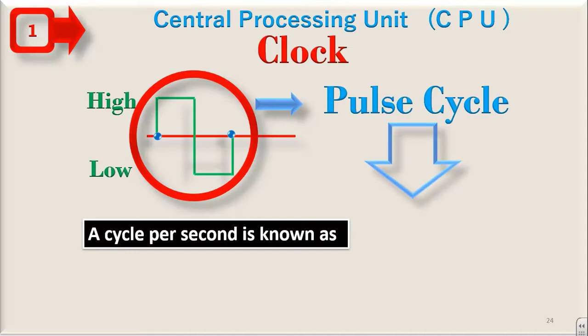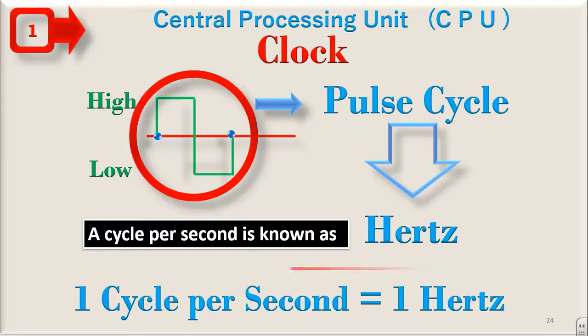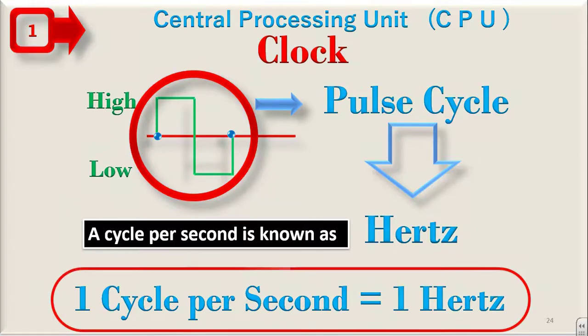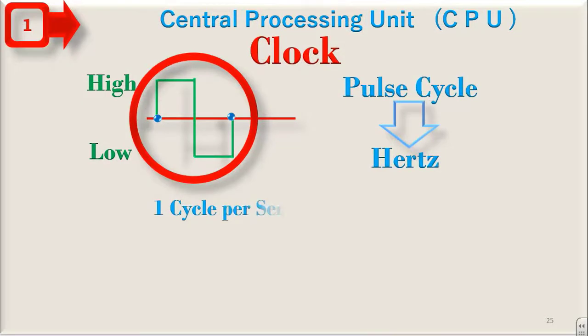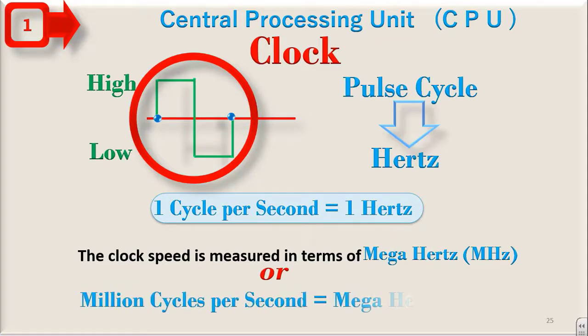A cycle per second is known as hertz. So one cycle per second is equivalent to one hertz. The clock speed is measured in terms of megahertz or million cycles per second, i.e. megahertz.